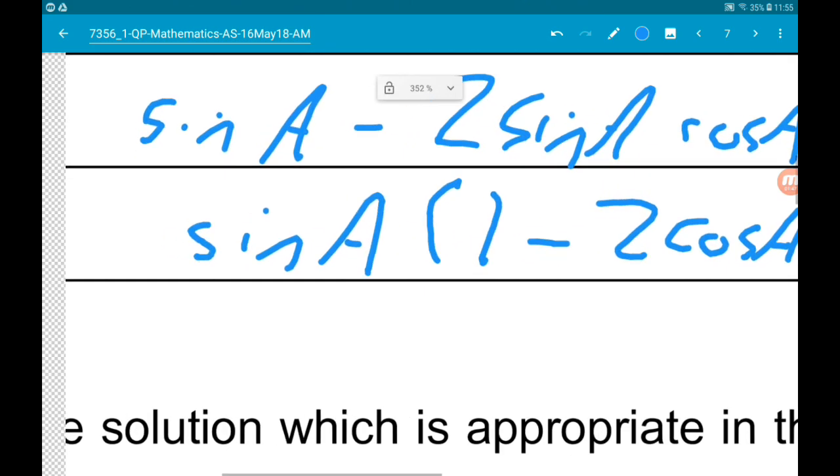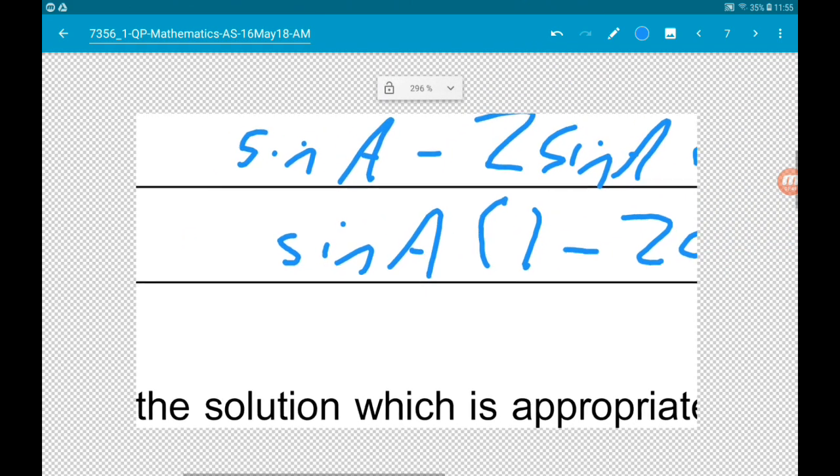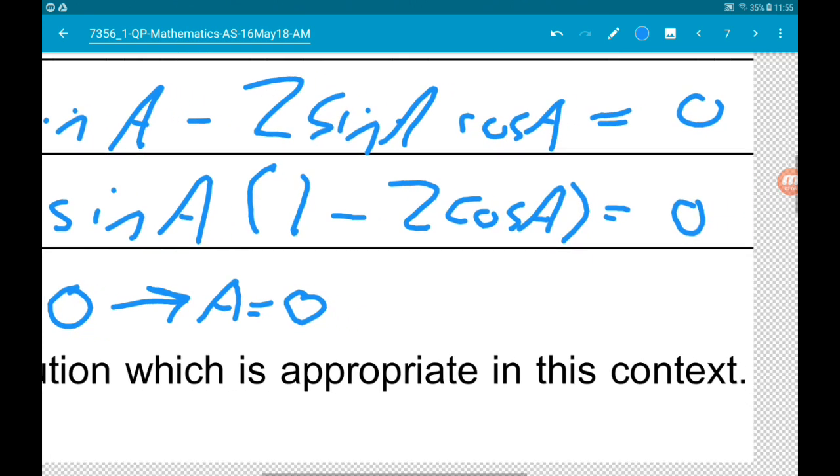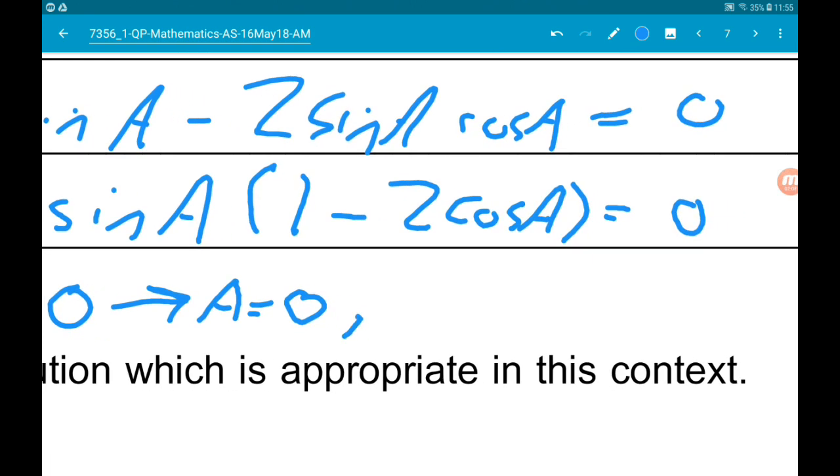So here we have two separate equations. Either sine of A is equal to 0 in our interval, or 1 minus 2 cos of A is equal to 0.